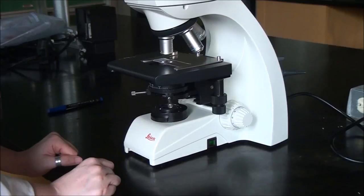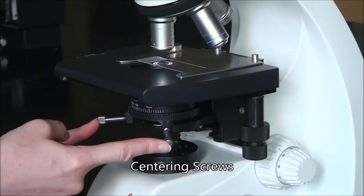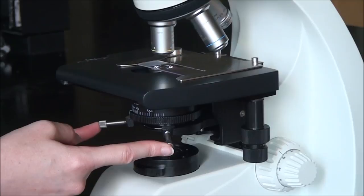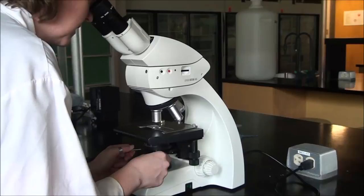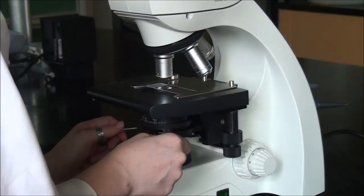To center the circle of light, we are going to be using these two large centering screws. This is the only time that we get to use these centering screws, when we're setting up Köhler illumination. Remembering to look through the oculars the whole time, you're going to make fine adjustments with these two centering screws to make that circle of light or heptagon of light occupy the very middle.